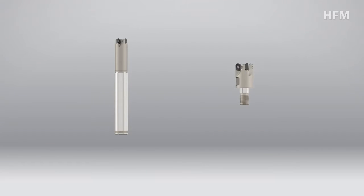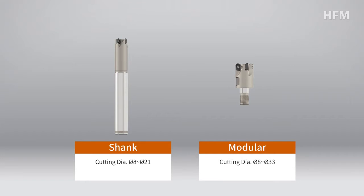HFM's holder is composed of shank and modular. Shank has lineup from 8PI to 21PI, while modular has lineup from 8PI to 33PI.